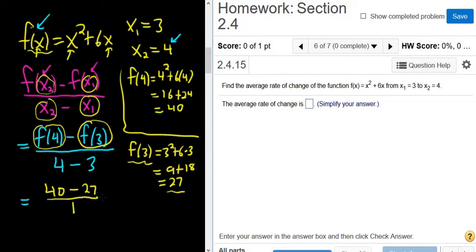And then on the bottom, we get 4 - 3, which is 1. 40 - 27 is 13. So 13 over 1. And the answer ends up being 13.